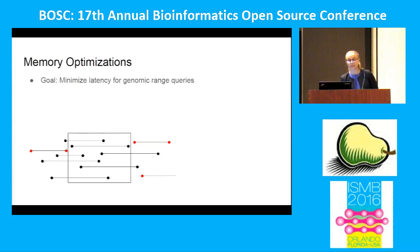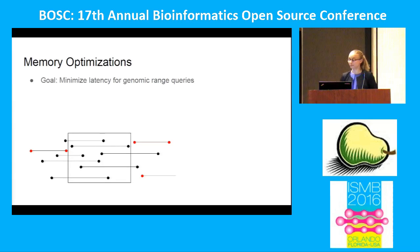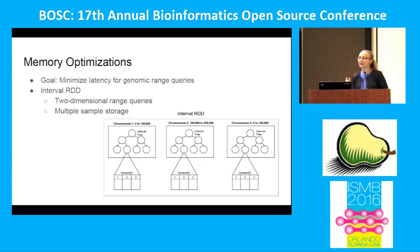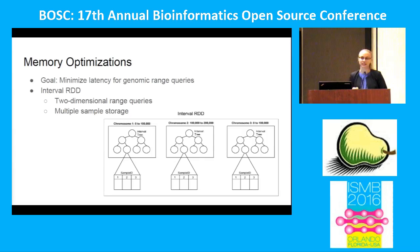The next type of optimizations are memory optimizations, to reduce latency for genomic queries once the data is already in memory. We can think of this as a simple overlapping query: we have features or reads that span a two-dimensional range, and we want to fetch all data overlapping that region. We've taken the idea of an interval tree for achieving low-latency overlapping queries and implemented it in an RDD, giving us a distributed low-latency environment to query specific regions. For example, if a user wants to fetch a small region from chromosome 3, we go to the specific node where that data is located and return that region.